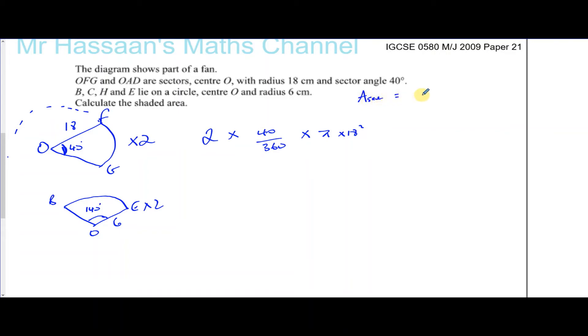The area of a sector is angle over 360 times πr². Here, r is 18. For this one, we have two times 140 over 360, but this time the circle has a smaller radius, 6 centimeters, so it's π times 6 squared.